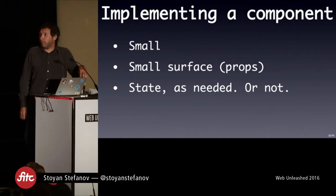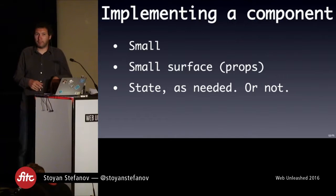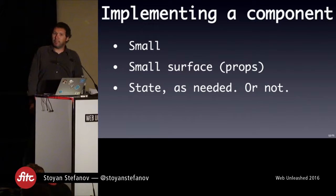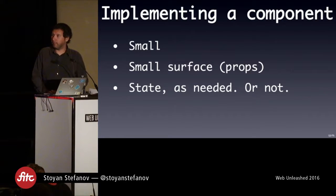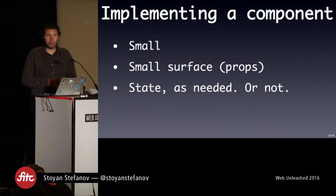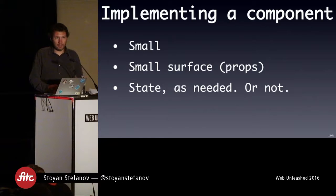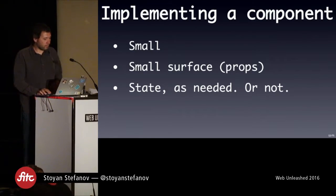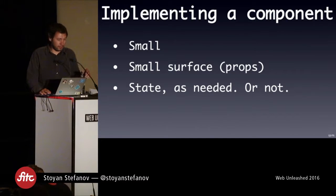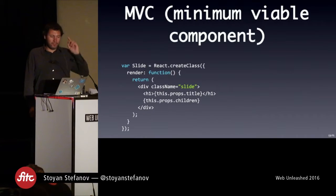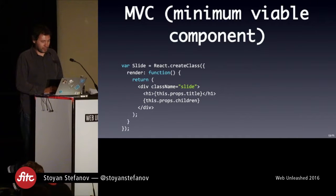Some best practices when creating new components: small is better — more manageable. Keep a small surface, meaning don't expose too many properties or make it too configurable, because once you put something out there it's hard to take back, and people will rely on it. It's hard to test all those combinations — it's like a function: if it takes zero, one, or two arguments, that's good; if it takes ten, it's almost impossible to test every combination. Components can manage their own state if they need it, but always strive to make them as simple as possible. This is our MVC — the Minimum Viable Component — the smallest bit that really works.